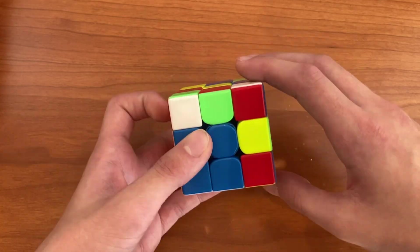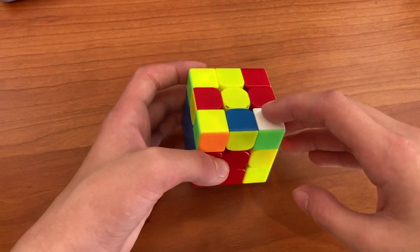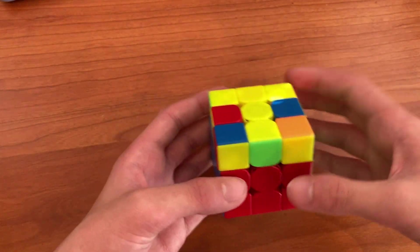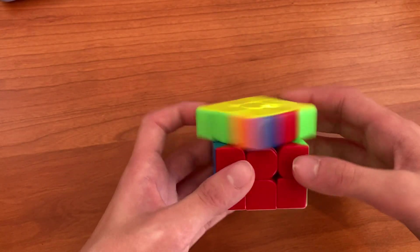So then he just goes straight into this pair, which is very easy. And then finally, this very easy pair, and then a very easy OLL, and then a T-Perm.